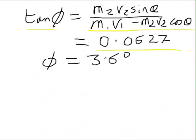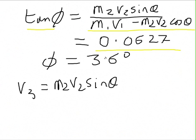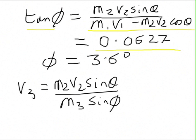And now, we can substitute that back into the bottom equation on the previous slide, which was that v3 equals m2 v2 sin theta over m3 sin phi. And plugging that in, we get a value of 160 metres per second.